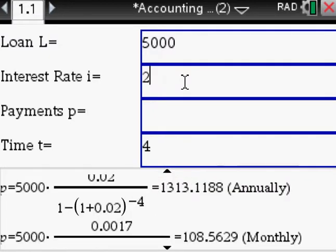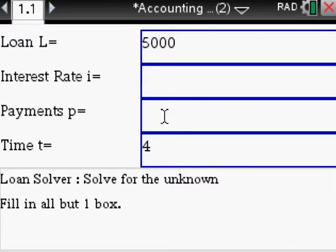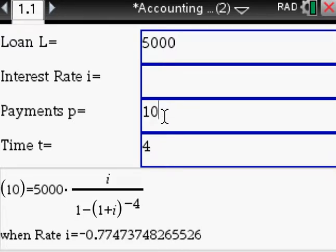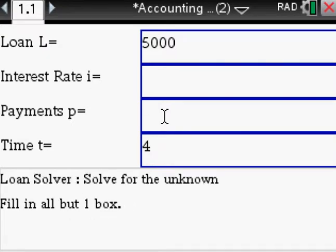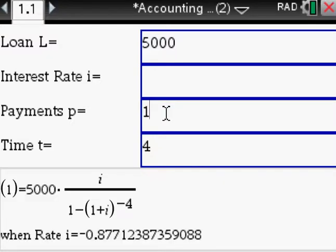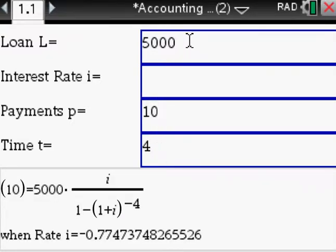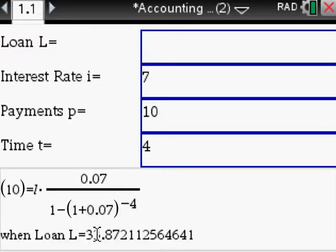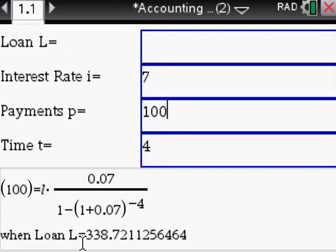So say you want to have a loan for 5000 over let's say four years and you want to pay a hundred dollars. That's too much. Okay, so let's say we do payments of ten, those numbers were just too much, interest rate is seven percent. Then the loan would be 33 dollars if we only make 10 payments at seven percent. If we can make a hundred payments, our loan amount would be three hundred thirty three dollars.